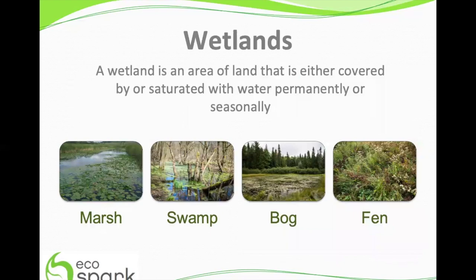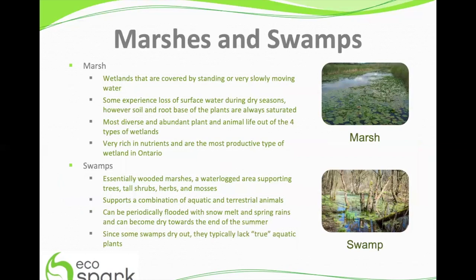A wetland is an area of land that is either covered or saturated with water permanently or seasonally. These systems provide valuable ecological services such as habitat for wildlife, flood control, and aid in water purification. In Ontario there are four major types of wetlands: marshes, swamps, bogs, and fens, that can be characterized by their distinctive plant and animal communities. Marshes are wetlands covered by standing or very slow moving waters, and are one of the most diverse, supporting abundant plant and animal life. They are very rich in nutrients and are the most productive types of wetlands in Ontario.